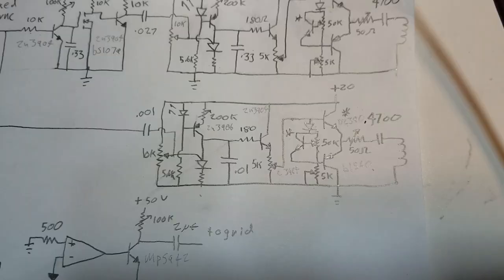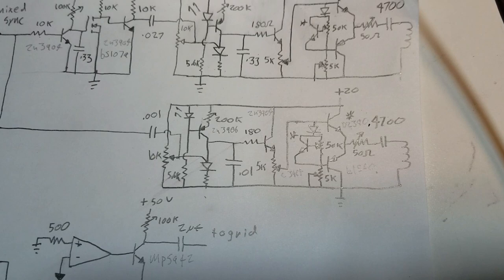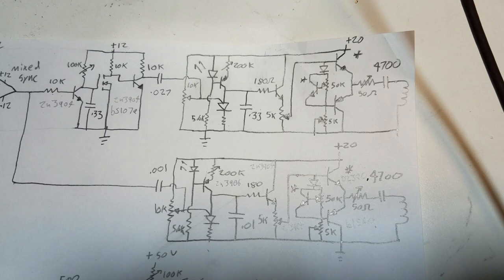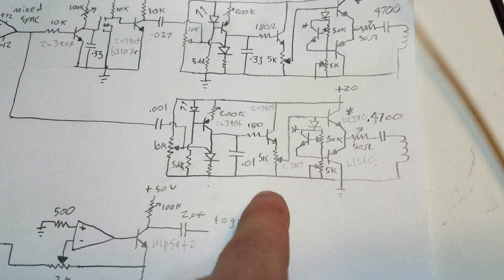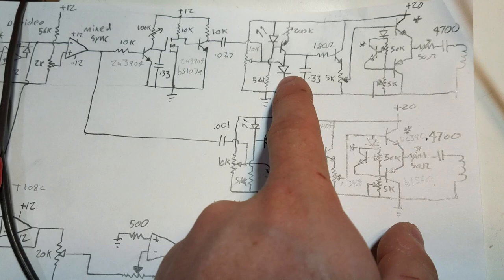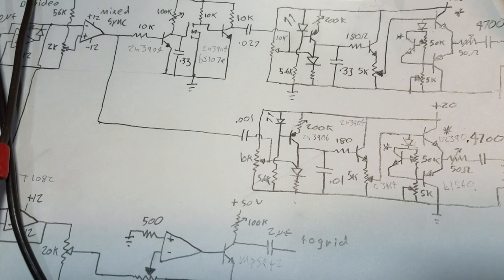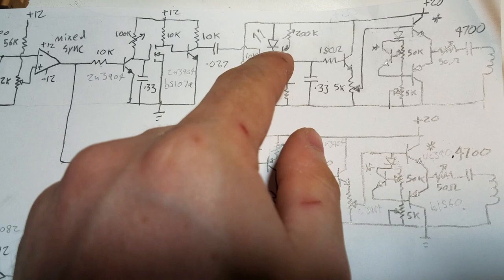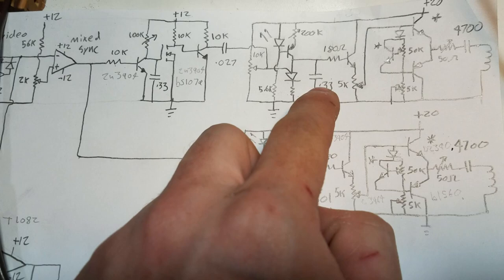Now on to the deflection amplifiers. These are two pretty much identical circuits, with the only difference being this timing capacitor right here. This is kind of cheating because they use special parts. They use something called a programmable unijunction transistor right here, and it's one of the easiest ways I know to make a sawtooth wave. All you have to do for it is just give it a constant current source right here and have a capacitor right here.